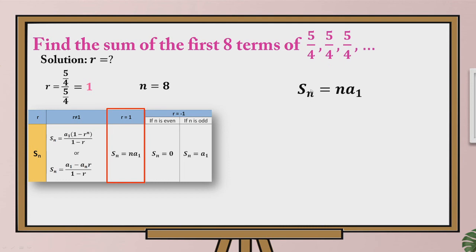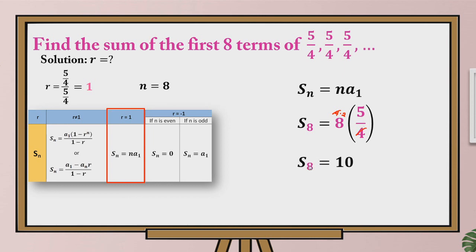To find the sum of the first 8 terms of this geometric sequence, we substitute those values into the formula. S sub 8 is equal to 8 times A sub 1, which is 5 over 4. To simplify, we multiply 8 times 5 to get 40, divided by 4. Since 8 has factors 4 times 2, the 4 in the numerator and the 4 in the denominator cancel, leaving 2 times 5 equals 10. So the sum of the first 8 terms of this geometric sequence is 10.